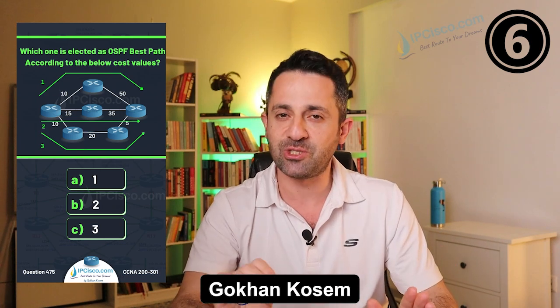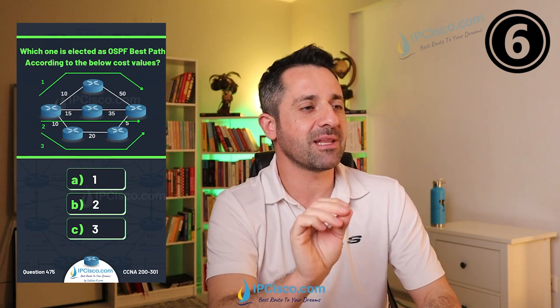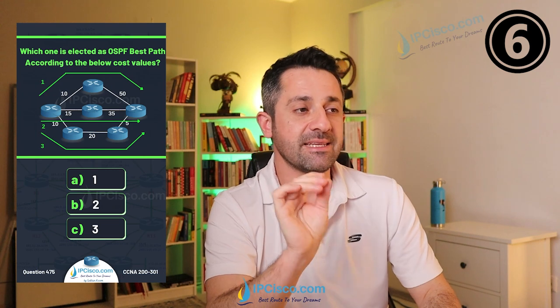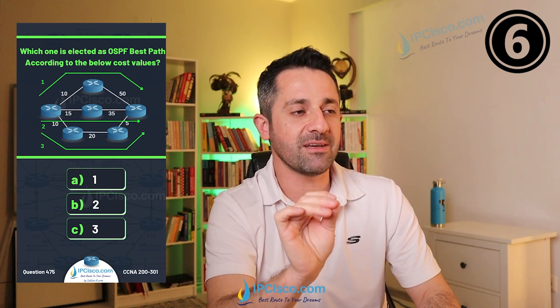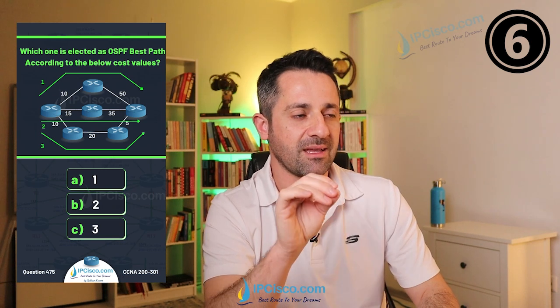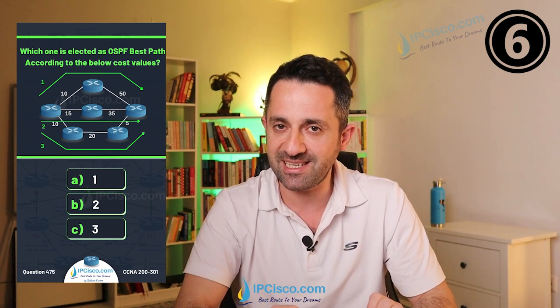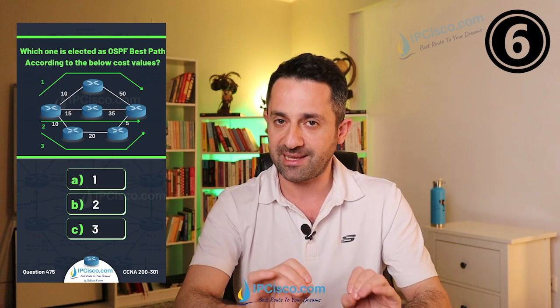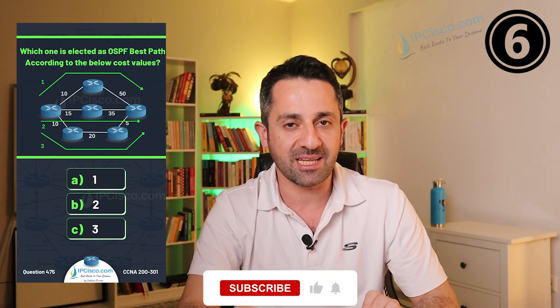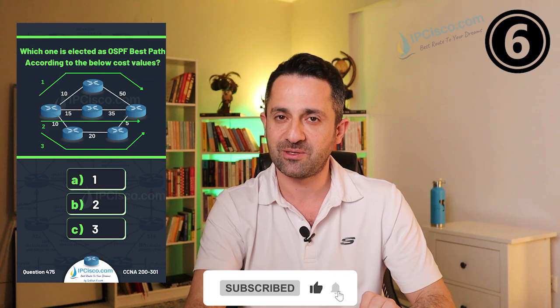Which path is elected as the OSPF best path based on the given cost values? For the first path, we have cost 10 + 50 = 60. For the second path, 15 + 35 = 50. For the third path, 10 + 20 + 5 = 35. The lowest cost is on path 3. Although path 3 passes through 3 routers while the others pass through 2, OSPF selects it as the best path because of the lowest total cost. Our answer is C.